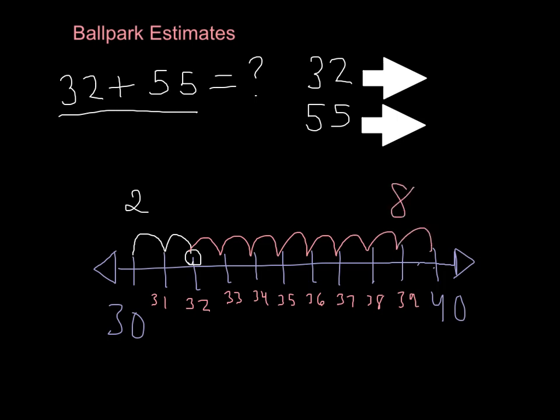And you want the one that is closer. So 2 spaces away is closer than 8 spaces away. So you're going to round this number 32 to 30.